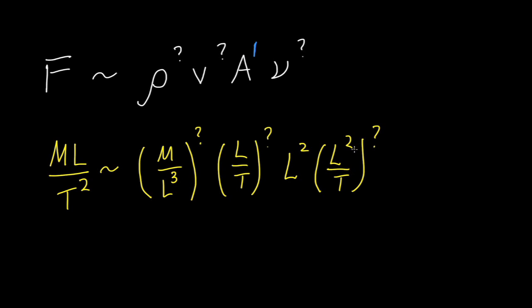Now let's solve for these unknown exponents one at a time. Looking first at the mass, there is mass here and mass here on the left side. But there is no other mass. So, the only way to get the mass to work out is to make this exponent 1.